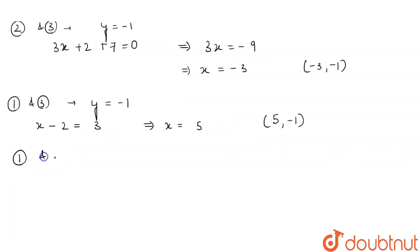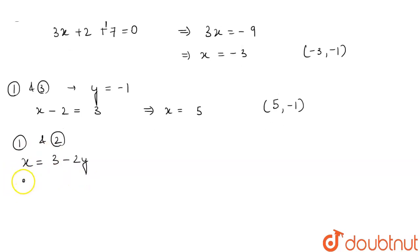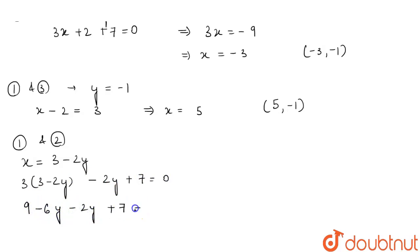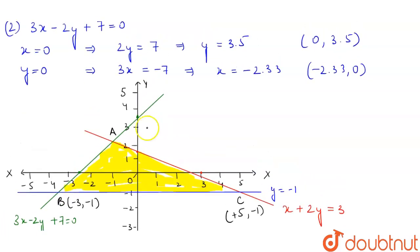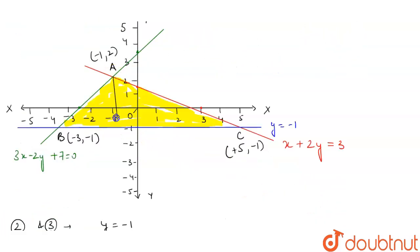Point A is the intersection of line 1 and line 2. From equation 1, we get x = 3 - 2y. Substituting into equation 2: 3(3 - 2y) - 2y + 7 = 0, which gives 9 - 6y - 2y + 7 = 0, so 8y = 16, therefore y = 2. Then x = 3 - 4 = -1. So A = (-1, 2). We see that AD will be the height of the triangle and BC will be the base.